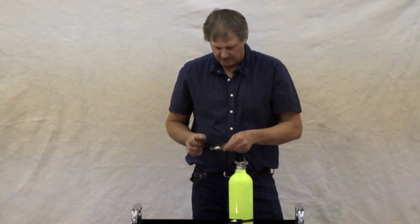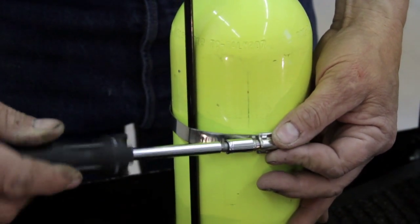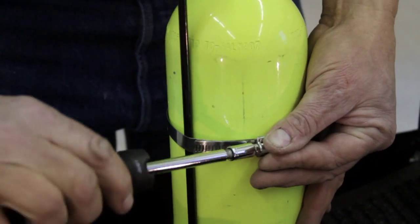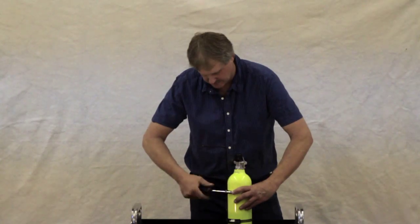Bring your other clamp in over the top. Orientate the two adjusters in the same position. I like to keep it about two or three inches from the top of the tank, depending on the size of the tank.